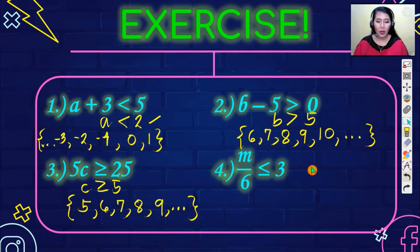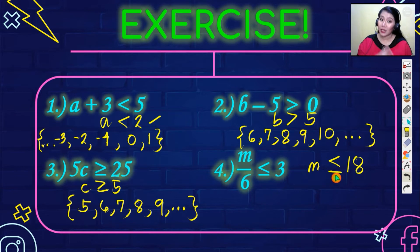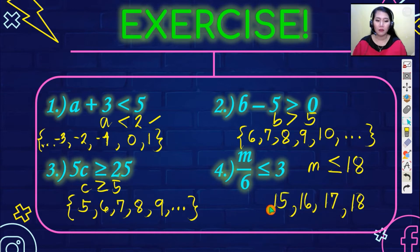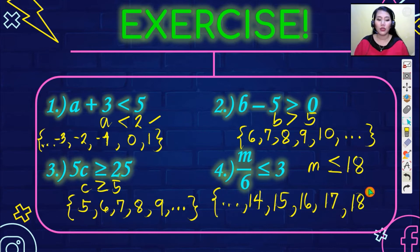For number four, m is less than or equal to 18. The numbers that include 18 and go downward — 18 is the highest — so: 18, 17, 16, 15, 14, and so on, including all negative numbers. Close your set in a brace. Those are your final answers for the exercise from Part 1.